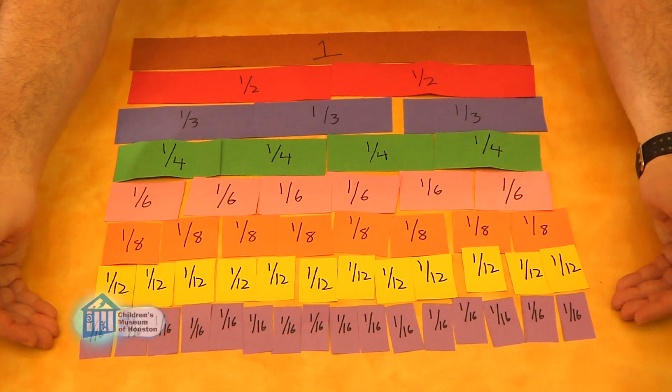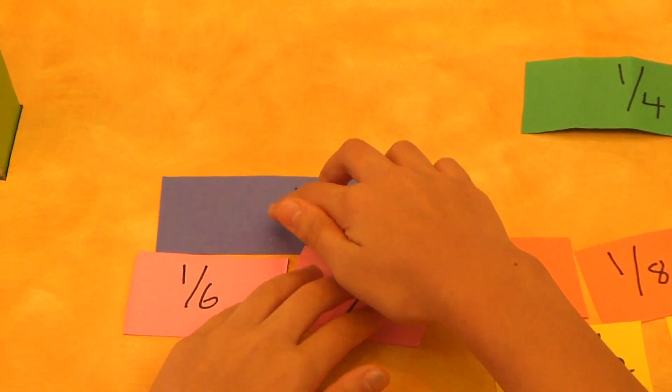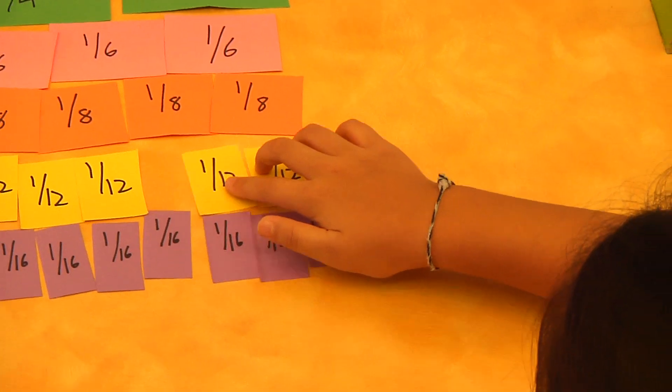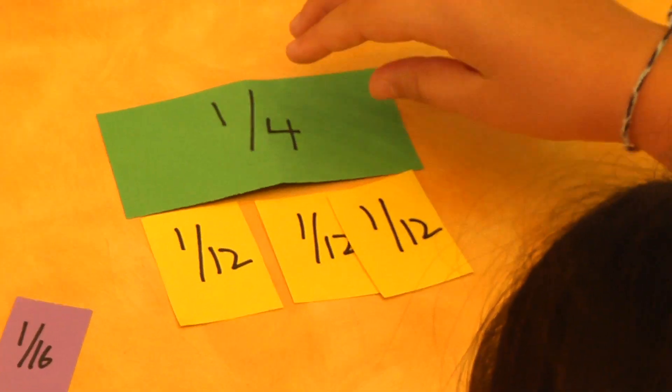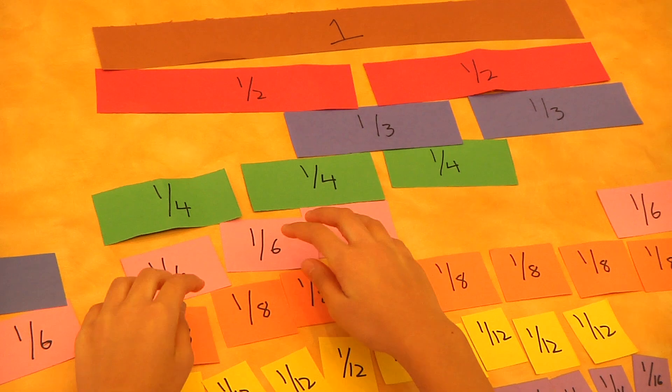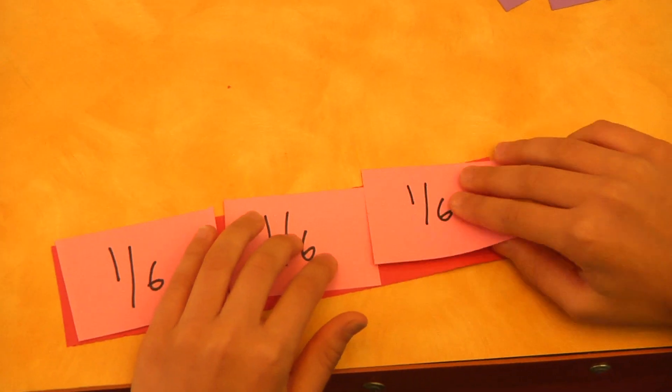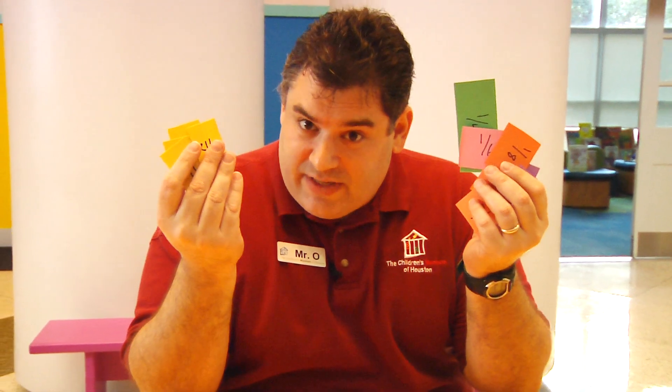What are some equivalencies you now see? Hmm. Well, two sixths is equivalent to one third, or one half of one third is one sixth. Oh, hey, look! Three twelfths is equivalent to one fourth. One third of one fourth is one twelfth. Check it out! Three sixths is equivalent to one half. One third of one half is one sixth. So now that you have your fraction cards and understand equivalencies, let me show you a fun game you can play.